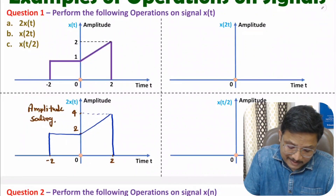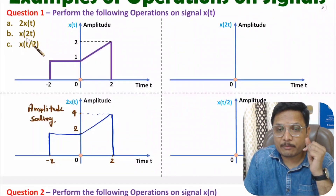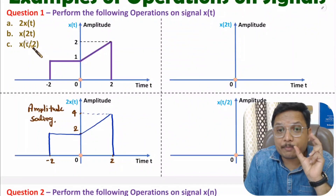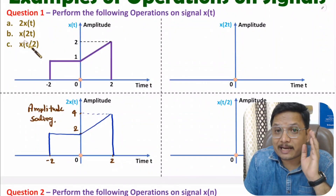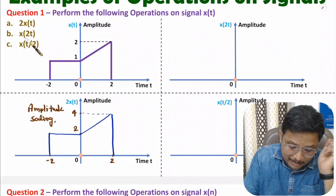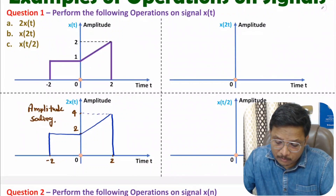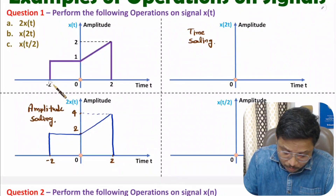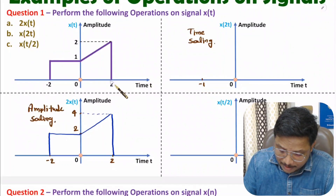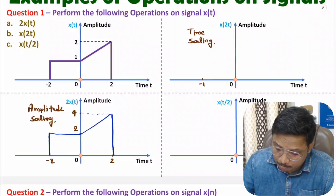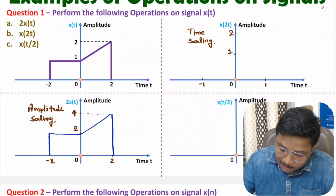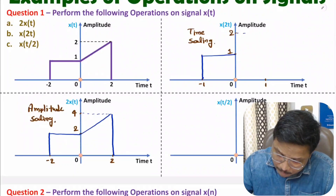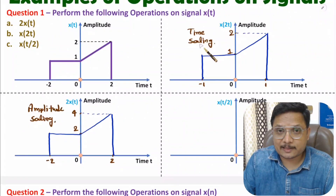Now I will explain the second operation, x(2t). x(2t) means we are performing time compression with scale factor two. In time scaling compression, you need to divide the time values by two. So minus two divided by two gives minus one, and plus two divided by two gives plus one. The amplitude remains as is — one and two. Shape-wise the signal is the same. This is how we perform time compression.